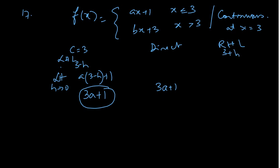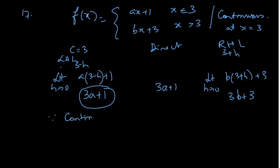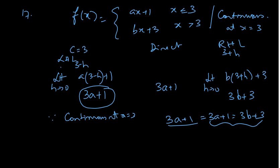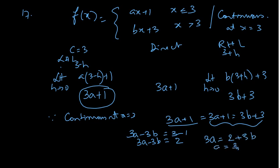RHL: x is 3 plus h, so it goes into the second piece. So limit h tends to 0 of B into (3 plus h) plus 3 gives you 3B plus 3. Since the function is continuous, we equate: 3A plus 1 equals 3B plus 3. So 3A minus 3B equals 2. Therefore A equals 2/3 plus B. This is the answer — that's how A and B are related.